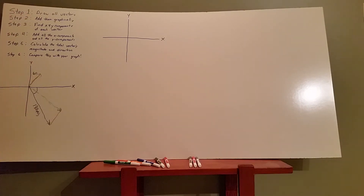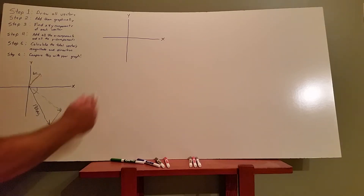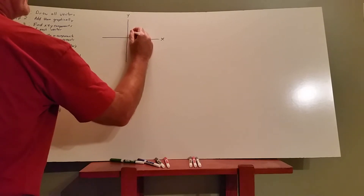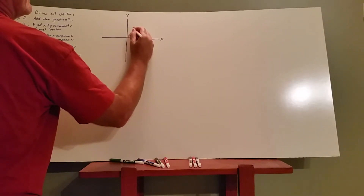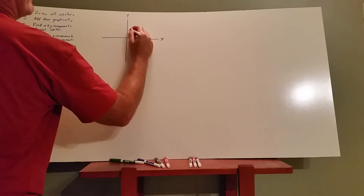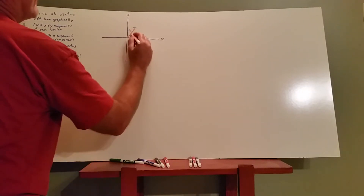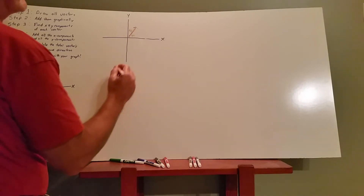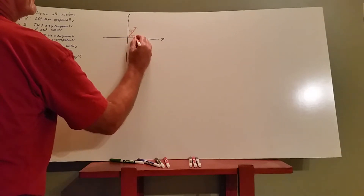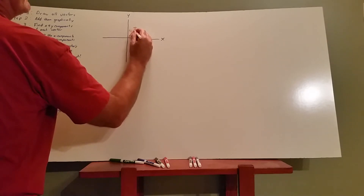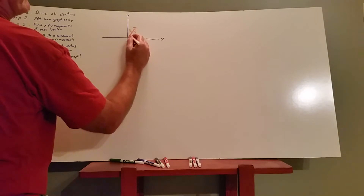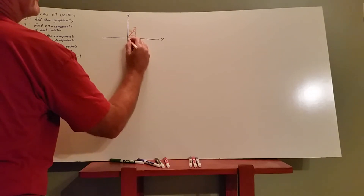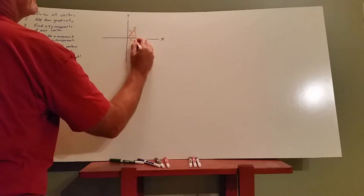That's adding them graphically. Now step three is to find the x and y components of each vector. The wind vector is 60 meters per second at a 60 degree angle. The side opposite the 30 degree angle is half the hypotenuse, so the x component of the wind is going to be 30 meters per second.